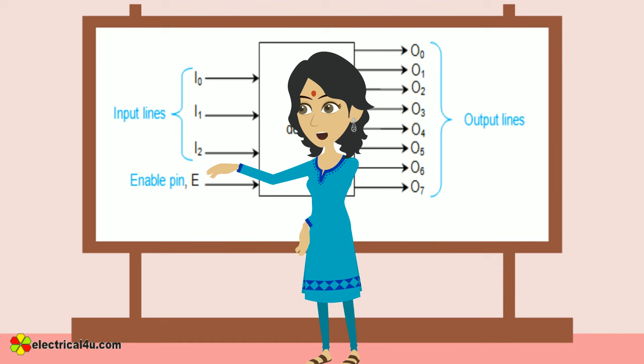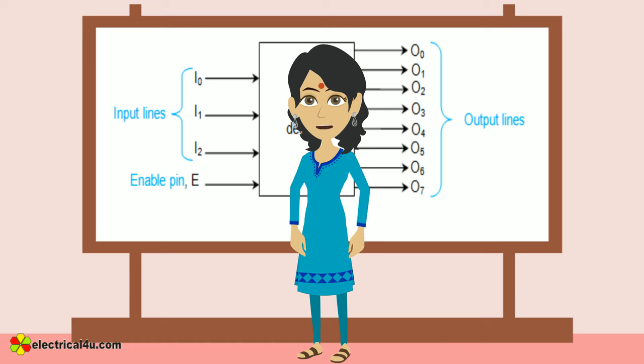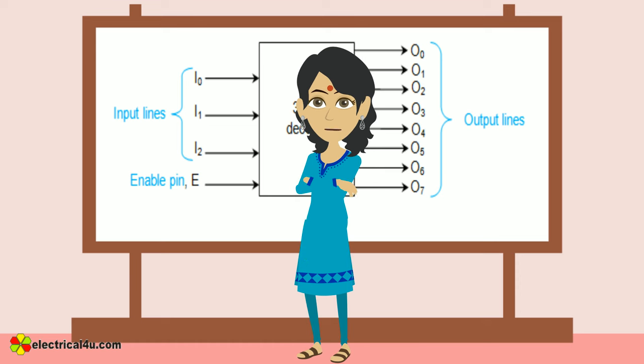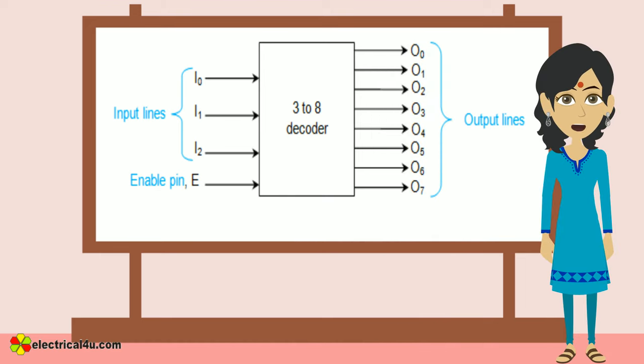This figure shows a binary decoder with one enable pin E and three input lines I0, I1, and I2, which further results in eight lines at its output.